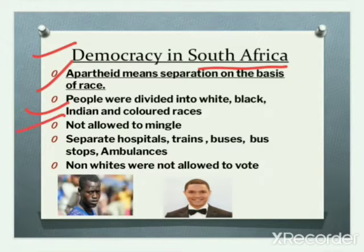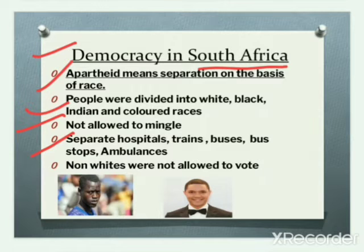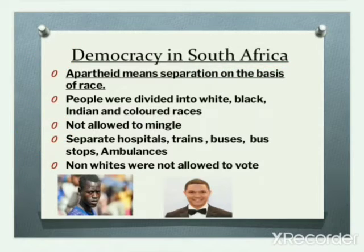These people were not allowed to mix with each other, or to live near each other, or even to use common facilities. There were separate hospitals, trains, buses, bus stops, and ambulances for black and white people. Non-white people were not allowed to vote either.